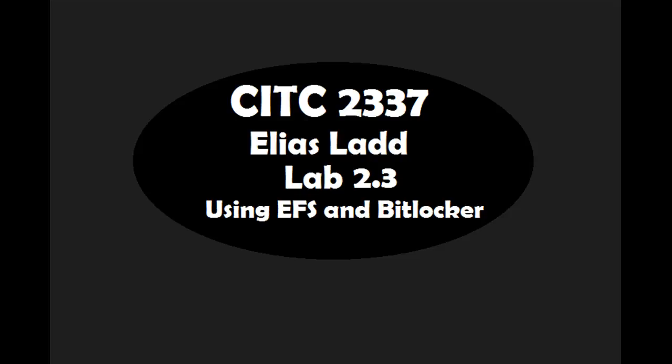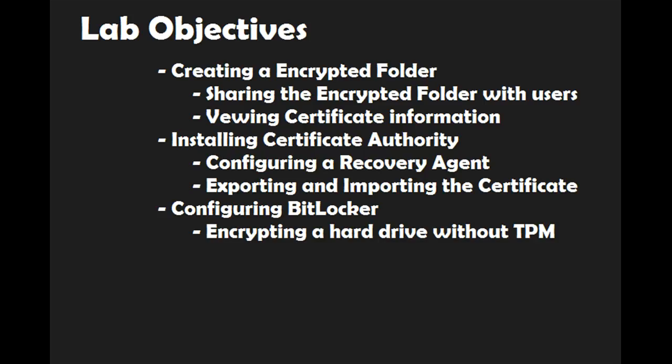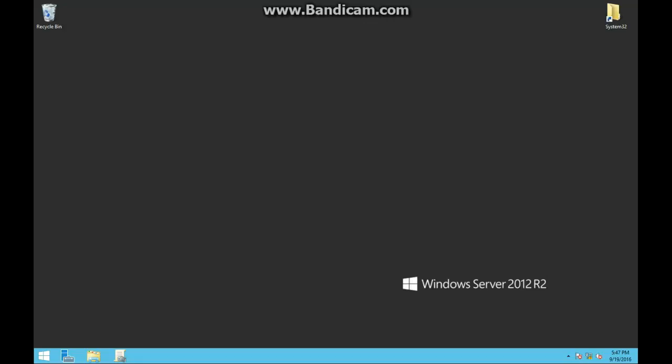Welcome to CITC 2337 Lab 2.3, a video covering EFS and BitLocker. For this video, we'll be creating an encrypted folder, sharing the encrypted folder with users, viewing certificate information, installing certificate authority, configuring a recovery agent, exporting and importing certificates, and configuring BitLocker with a 5GB encrypted drive. Let's go ahead and begin with Lab 2.3, demonstrating how to use EFS — the Encrypted File System — and BitLocker.